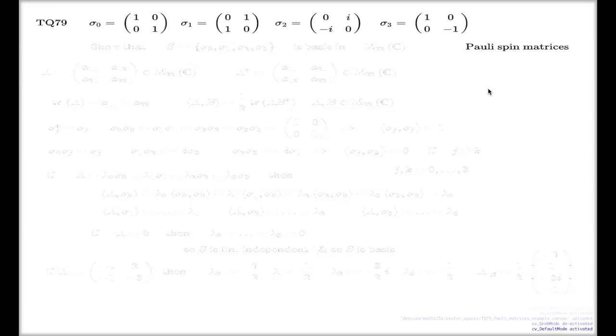For our purposes, I'd like to discuss with you why this set of Pauli matrices produces a basis. Question 79 actually requests to show that if you take this system of these four matrices, that will be a basis in the space of two times two matrices.